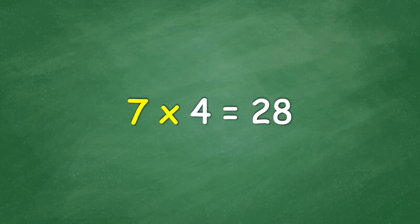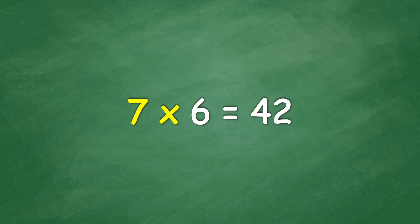7 times 4 equals 28. 7 times 5 equals 35. 7 times 6 equals 42. 7 times 7 equals 49.